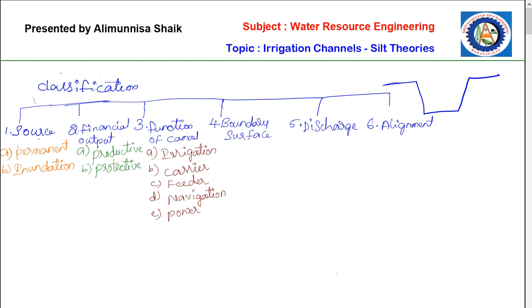A feeder canal is constructed with the idea of feeding two or more canals. Feeder canals are not used for direct irrigation — they are constructed specifically to supply water to two or more canals. The best examples are the Rajasthan feeder canal and the Shrihan feeder canal, where water supply is given as a source to two or more channels.